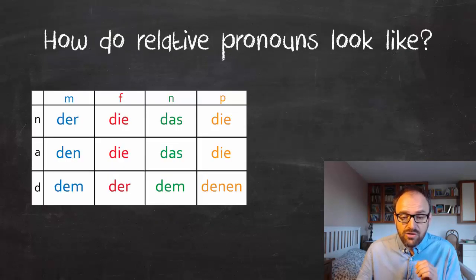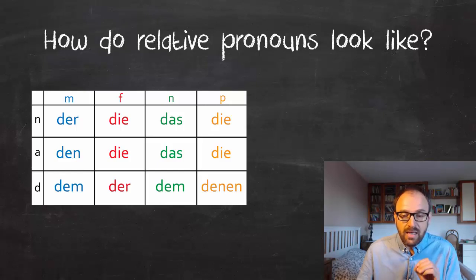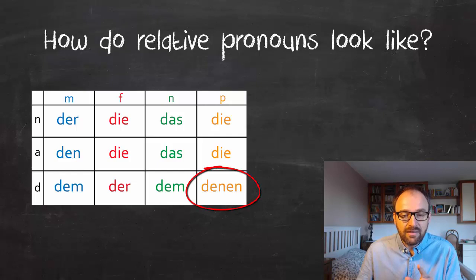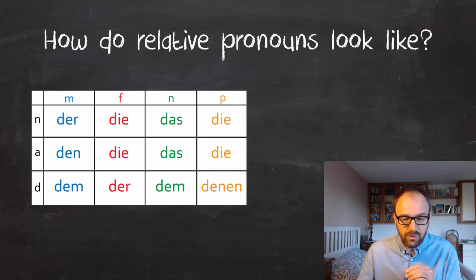Now let's have a look at the German relative pronouns. As you can see, they are exactly the same as the definite article in the different cases, except for the dative plural: 'denen'. I haven't included the genitive pronouns on purpose because we hardly use those in spoken language.